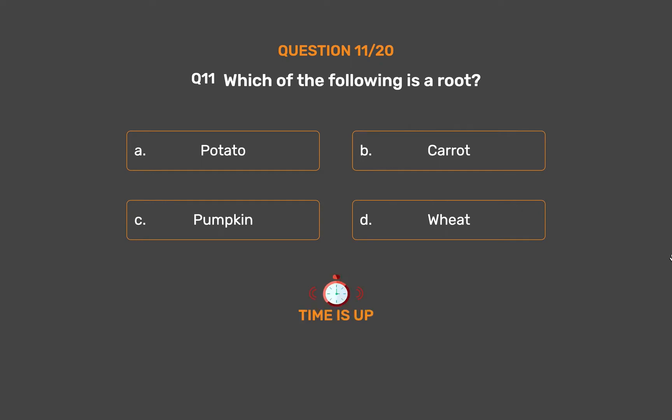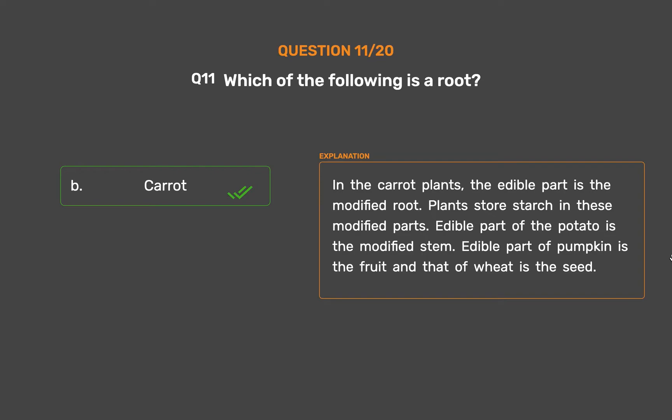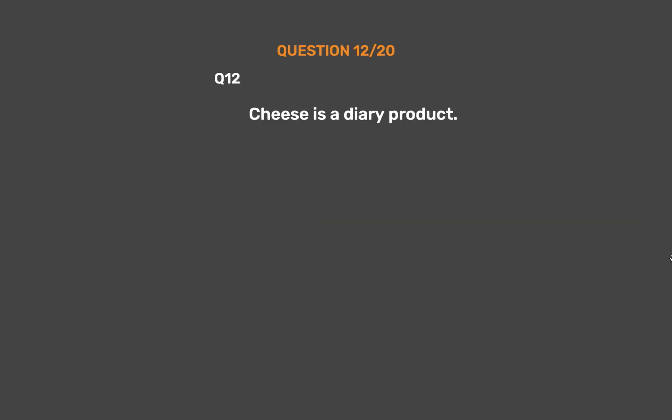The correct answer is Option B, Carrot. In the carrot plant, the edible part is a modified root. Plants store starch in these modified parts. The edible part of the potato is the modified stem. The edible part of pumpkin is the fruit and that of wheat is the seed.